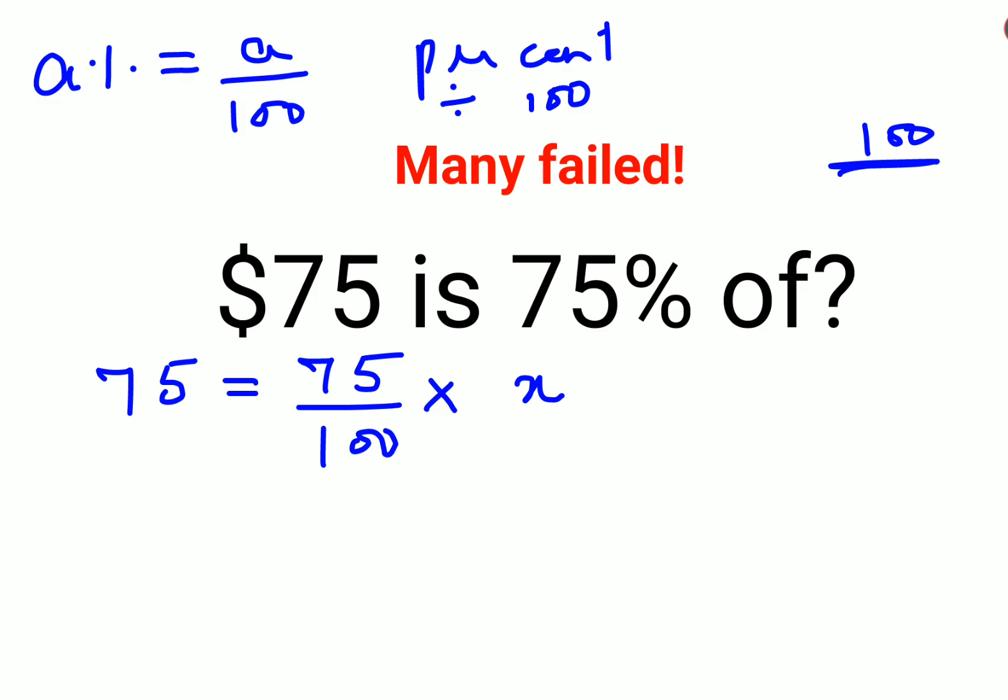Since we have 75 on both sides of the equal sign in the numerator, let's just shift it. So we can say 75 times 100 divided by 75 equals x.